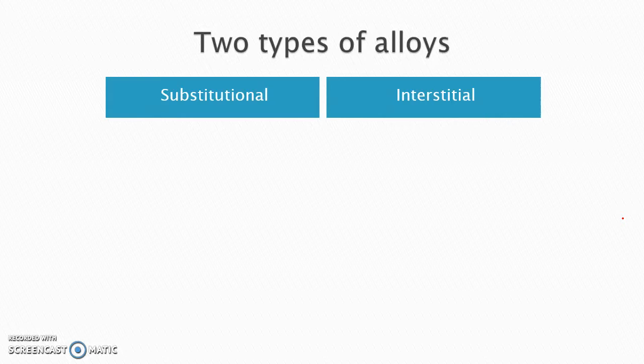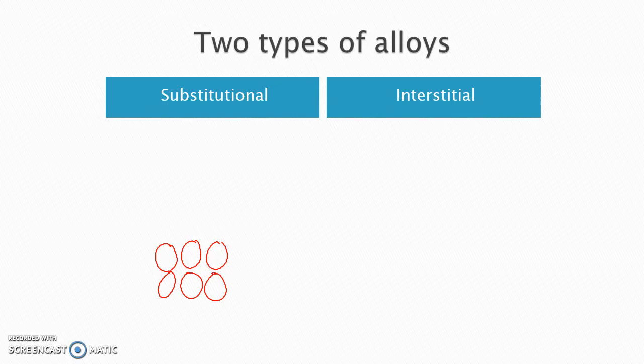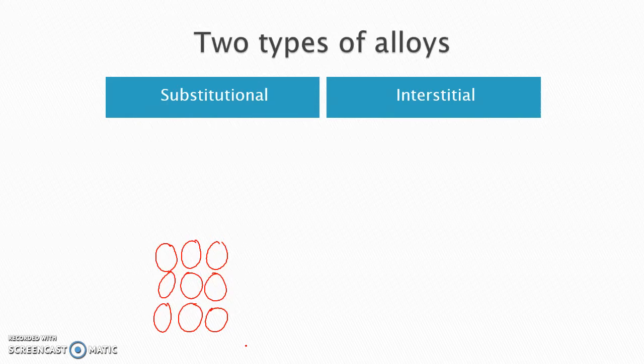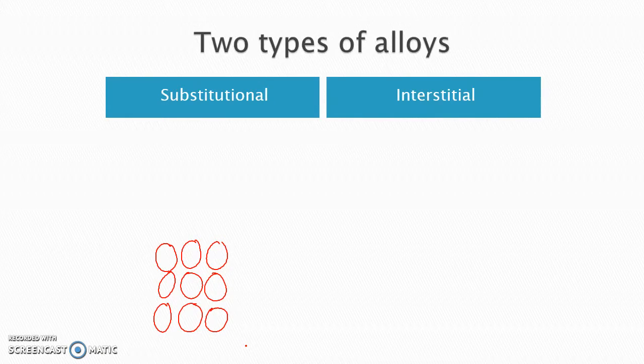For a substitutional alloy, again, remember, this is a metal. Even though it's a mixture of metals, it still is metallic bonding. So we're going to have our atoms organized in kind of rows and columns. For a substitutional alloy, it kind of sounds like what it is. You substitute one metal atom for another. So when you mix the two together, we have the same kind of structure, same rows and columns, but you replace some of them with atoms of the new element. So they get mixed in there. Usually it's a homogeneous mixture, so there's some kind of pattern to it.